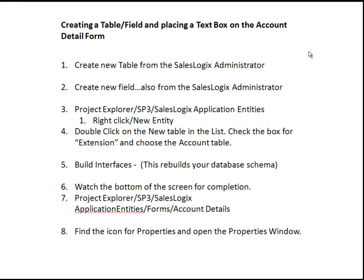Then we need to go into the Project Explorer. We'll open up our Application Architect, go into Project Explorer, Service Pack 3, SalesLogix, Application Entities, and right-click to choose New Entity. We'll add our new entity — our new table — into the Application Architect. Then we double-click on that new table and check the box for Extension, making this an extension table off of the account table, and then choose the account table.